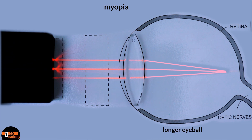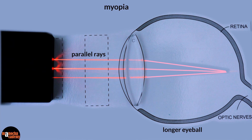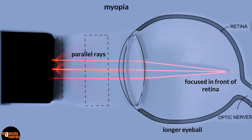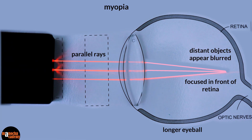Let's visualize this with our light experiment. Here I'm using an eye diagram where the eyeball is longer than usual. When the object is far away, the rays of light coming from the object will be parallel rays — our ray box is giving us parallel rays here. Since the eyeball is longer than usual, the light entering the eye gets focused in front of the retina rather than directly on it. Now you can visualize why distant objects appear blurred for a person having myopia.